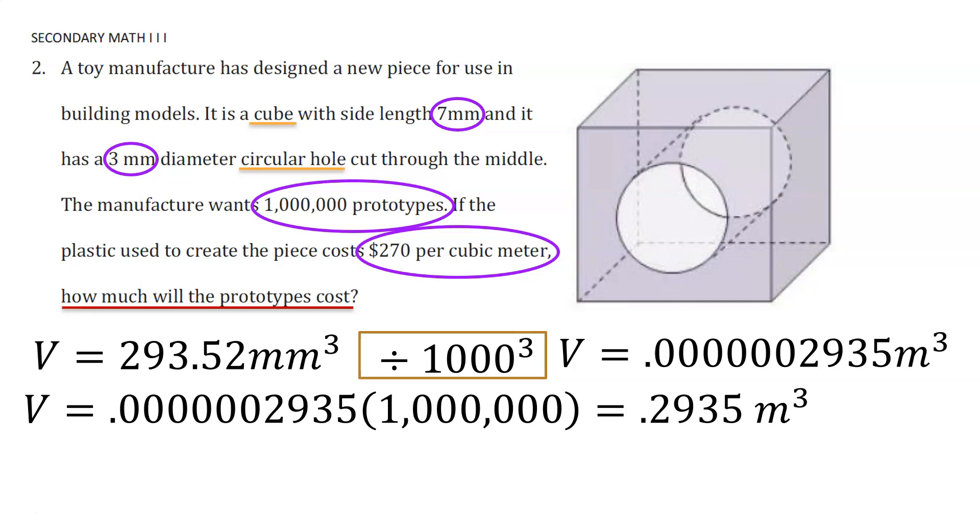Now that we know that we need a total of .2935 cubic meters of plastic, we can multiply that by the cost of a cubic meter of plastic to get the cost of the prototypes needed by the company. This cost is $79.25.